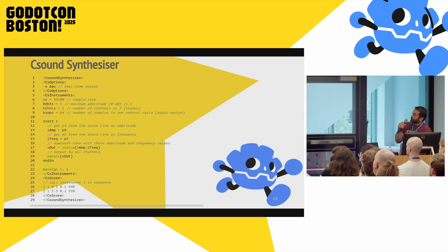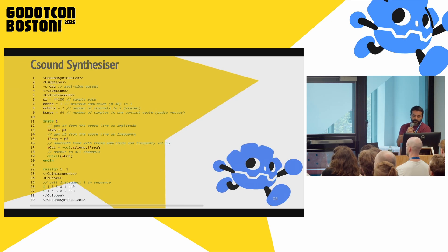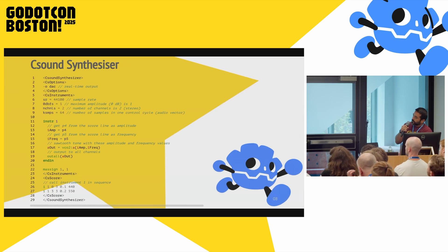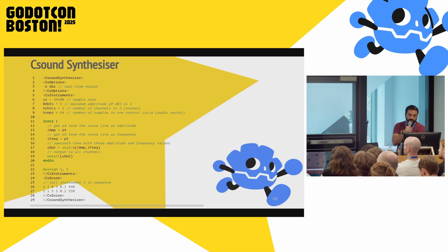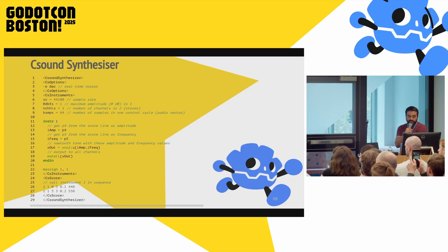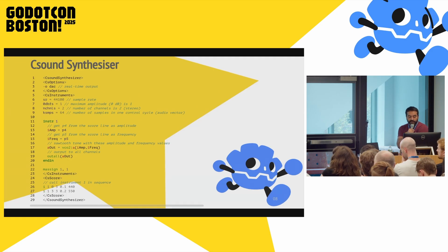Here's an example of a simple synthesizer in CSound. You have an HTML-looking format with CSound options, and then a section where you define your CSound instruments. Here I have an instrument named 1. It takes in a few parameters — in CSound the parameters are p1 through n depending on how many you have. Here I'm passing in the amplitude and the frequency, using the VCO opcode to generate a sawtooth wave, and outputting that into the output channels. In the score section I'm calling that instrument with certain parameters to generate sounds at specific times, with a certain length, frequency, and amplitude.